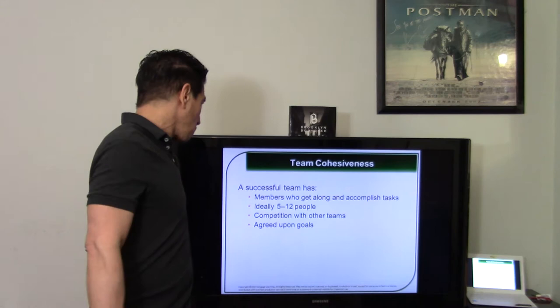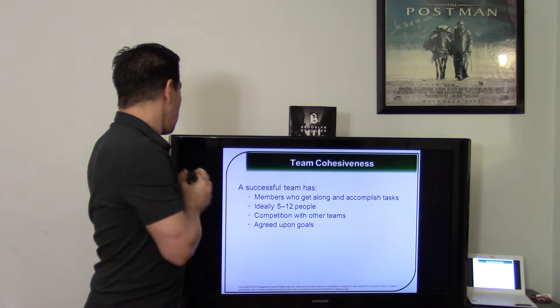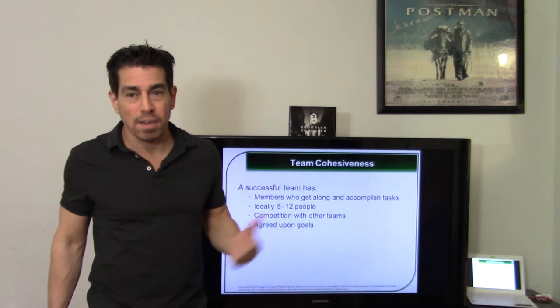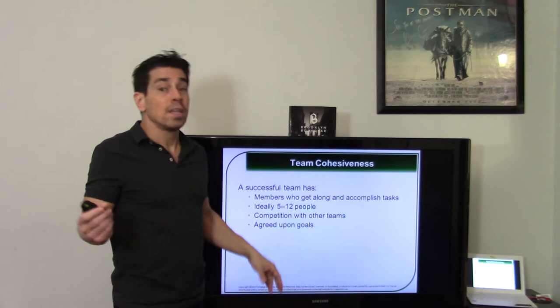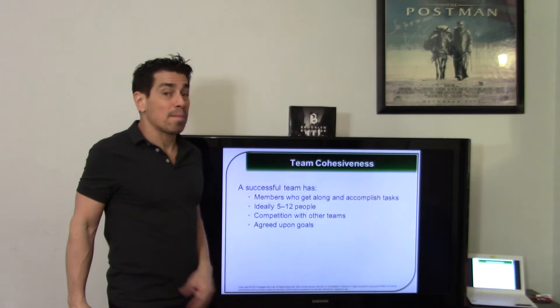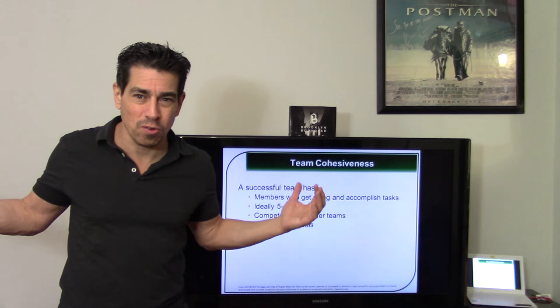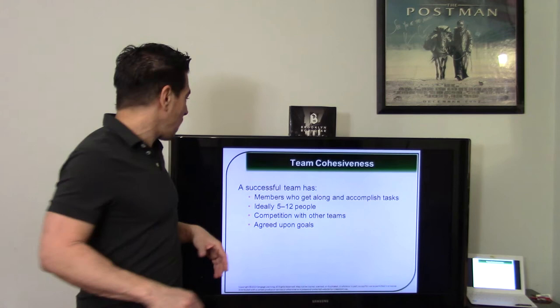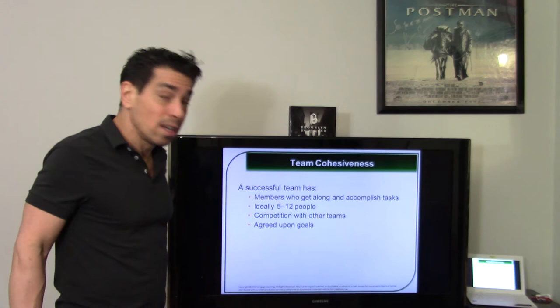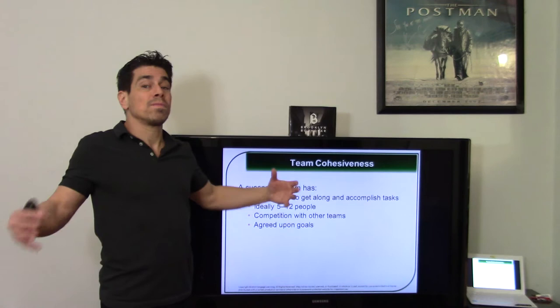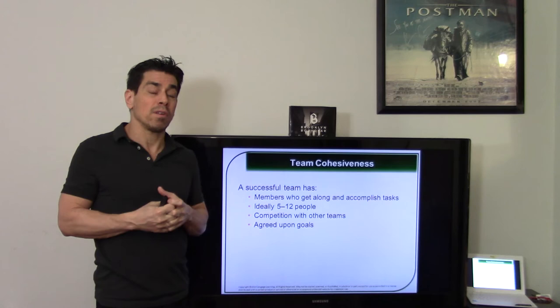Team cohesive. What's the word cohesive? Getting together. Cohesiveness. A successful team gets along. Usually, ideally, 5 to 12 people. Why is it bad to have more than 12 people? Then it becomes a little unruly. Why is it bad to have less than 5? Because maybe you have too much work. It's always good to have competition with other teams. Think about the Yankees and the Red Sox. The competition is always sold out. Yankee and Red Sox games always sold out. Mets and Yankees always sold out. Competition with other teams. That creates cohesiveness. You want to fight with them. Rivalries are great. The New England Patriots with everybody. And you have agreed upon goals. The goals that you agree upon make you more as long as you can agree and the storming went to norming and you can agree your team will be cohesive.